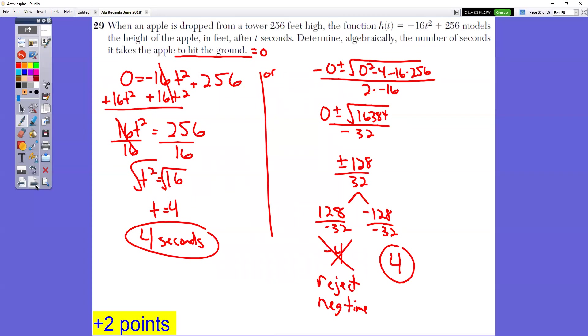In question number 29, an apple is being dropped from a tower 256 feet high. Determine algebraically the number of seconds that it takes the apple to hit the ground. Hitting the ground is equal to 0, so I could set that equation equal to 0 and solve. I would get the letter onto one side, so I'd do plus 16t squared on both sides. Now it's just a one-step equation. I'd divide by 16 on both sides. Those would cancel out, so I have t squared equals 16 because 256 divided by 16 is 16. The opposite of t squared, the opposite of squaring a number, is to take the square root. So that would become four. It would really be plus or minus four and we would reject the negative four.